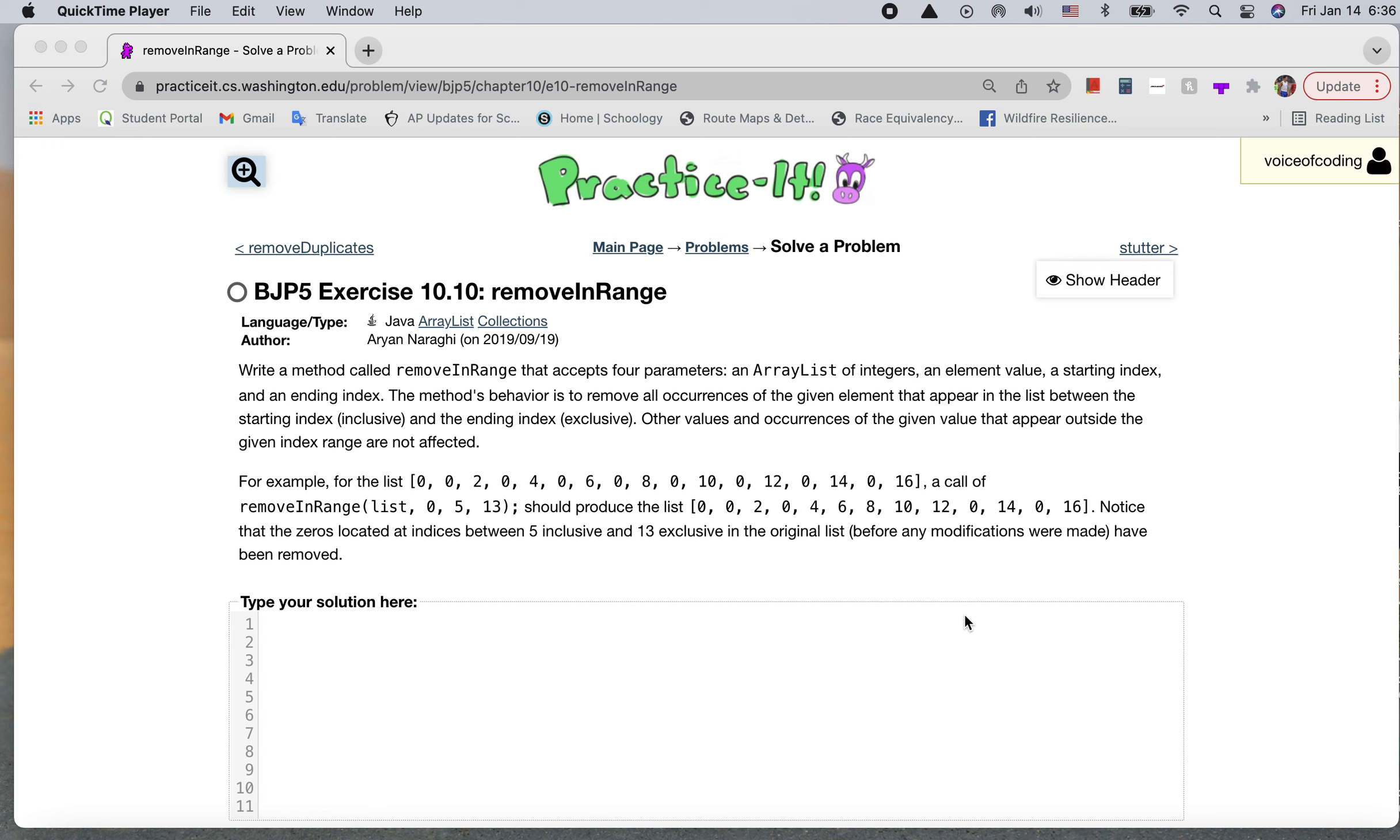The problem is basically saying that we're going to have the start and end index, and we're going to remove any occurrence of that element value we give, which is the second thing we pass in, in between those indices.